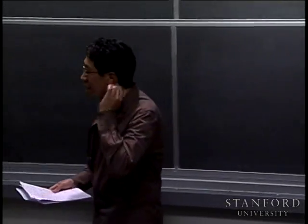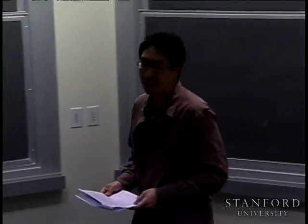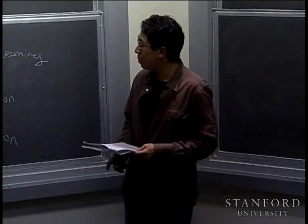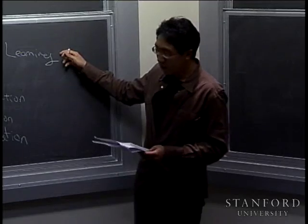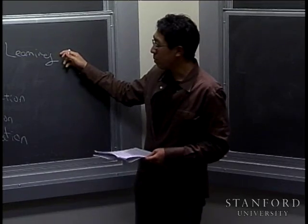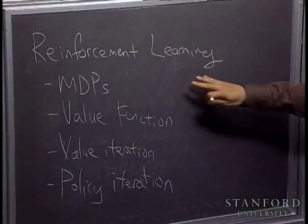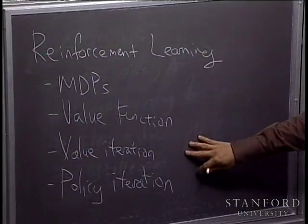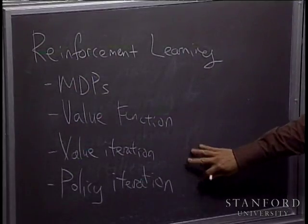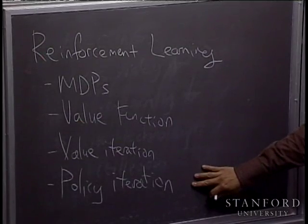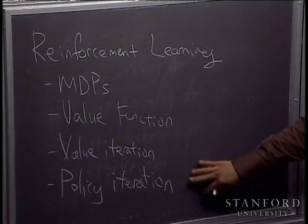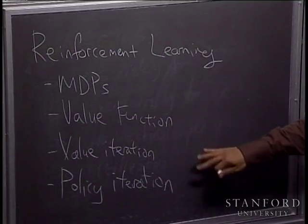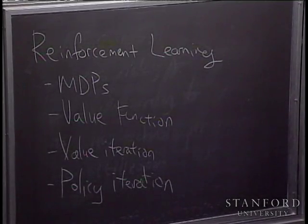Welcome back. Today I want to start a new chapter in our discussion on machine learning — in particular, a different type of learning problem called reinforcement learning. We'll talk about Markov decision processes, value functions, value iteration, and policy iteration. Both of these last two items are algorithms for solving reinforcement learning problems.